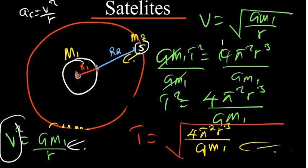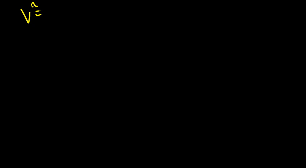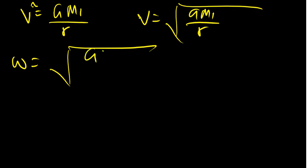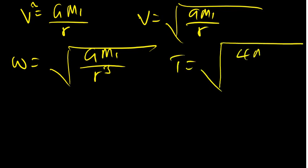So here are the three important formulas we need to know. First: V squared equals G times M1 divided by R, or V equals the square root of G times M1 divided by R. Second: angular velocity ω equals the square root of G times M1 divided by R cubed. Third: T squared equals 4π² times R cubed divided by G times M1.